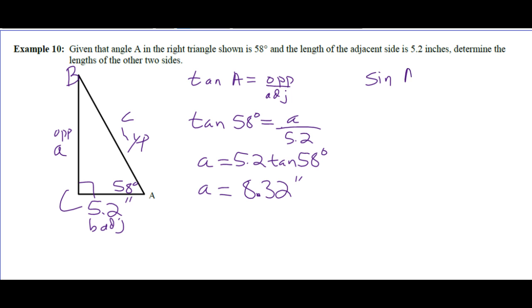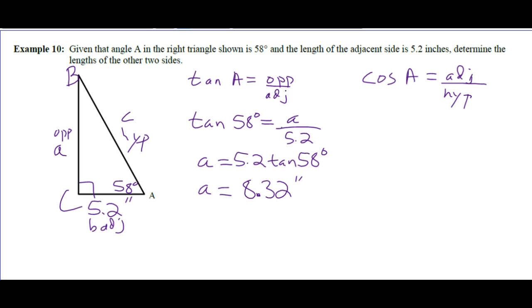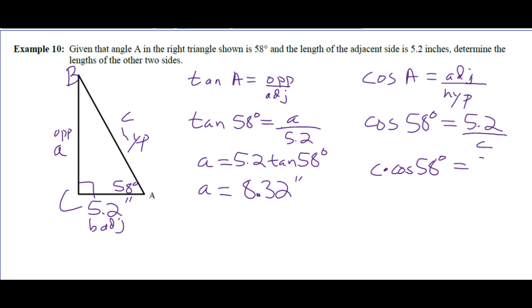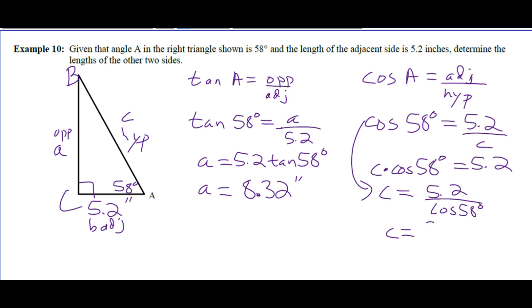Now we want to work out the hypotenuse. We'll avoid using the calculated value and instead use cosine since we know the adjacent side. Cos 58° equals adjacent (5.2) over hypotenuse c. Multiply both sides by c, then divide both sides by cos 58°, giving c = 5.2 divided by cos 58°. To the nearest hundredth, the hypotenuse is 9.81 inches.